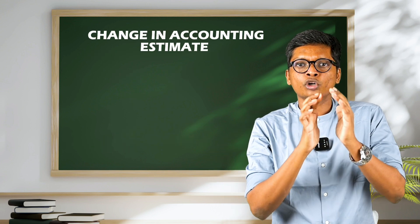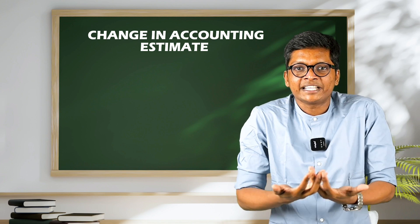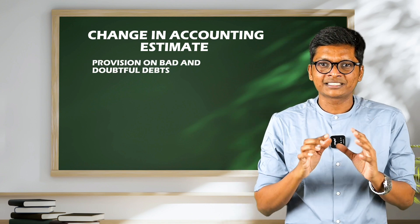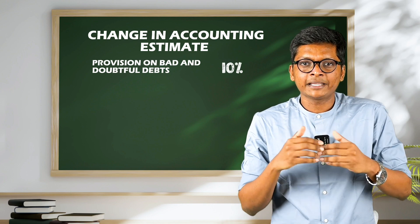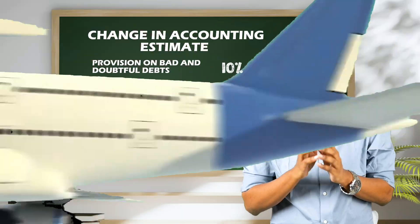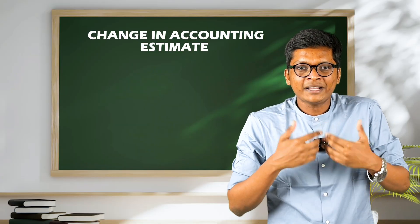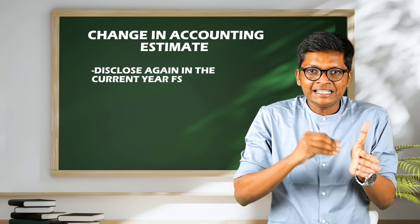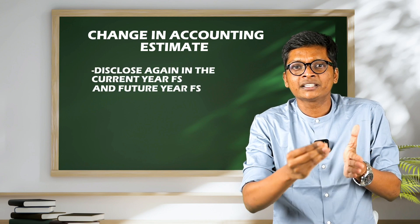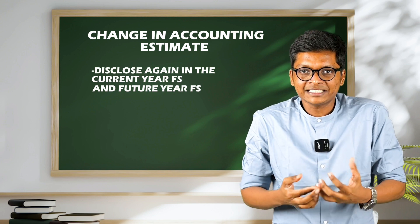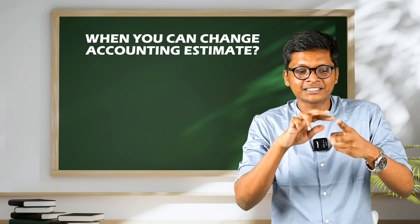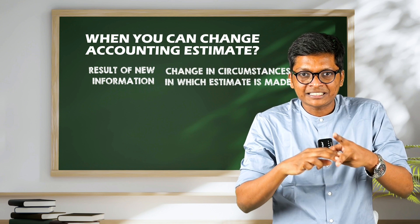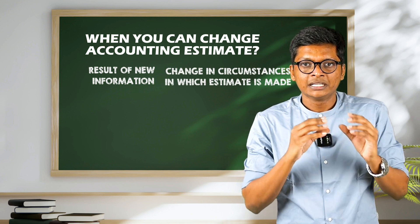Next, change in accounting estimate. Estimates are meant to be changed — for example, provision on bad and doubtful debts. You will estimate 10%, but if circumstances change, 10% will become 20%. Whenever the estimate changes, the standard says just disclose it in the current year FS and future years FS. The standard also says you can change an accounting estimate in two cases: as a result of new information or a change in circumstances in which the estimate is made.